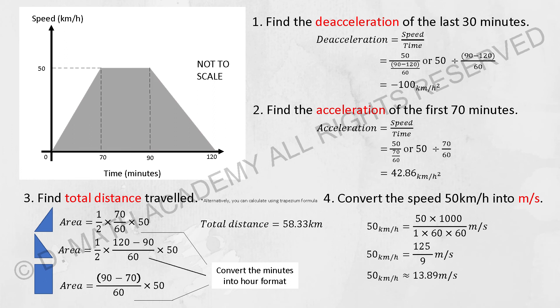However, if they mention deacceleration already, when you write the final answer, it should be 100. You cannot list down the negative as the answer.